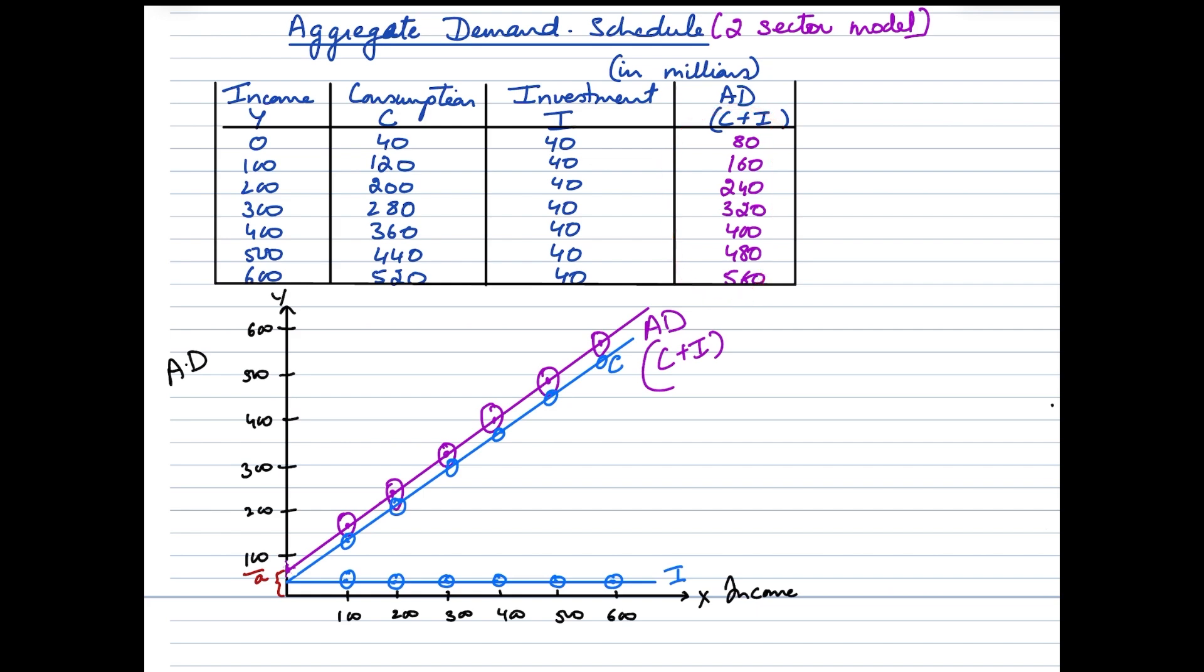Now when we take a look at this particular diagram, we see aggregate demand depicted on the y-axis and national income on the x-axis. Now if you remember, aggregate demand greatly depends upon the level of national income in the economy. So as the income level increases, you would see an increase in the aggregate demand and that's what you would see in the diagram. Now in the diagram, we have the investment curve, which is a parallel curve to x-axis.